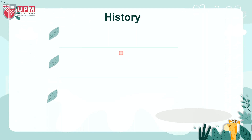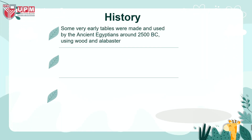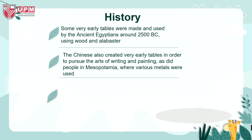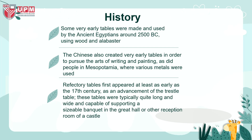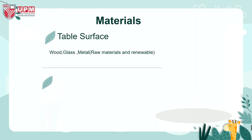The history of the table: some very early tables were made and used by ancient Egyptians around 2500 BC, using wood and alabaster. The Chinese also created very early tables in order to pursue the arts of writing and painting, as did people in Mesopotamia, where various metals were used. Refectory tables first appeared at least as early as the 17th century as an advancement of the trestle table. These tables were typically quite long and wide, capable of supporting a sizable banquet in the great hall or other reception room of a castle. Most table surfaces are made from wood, glass, or metal, and most table legs are made from metal or rubber.